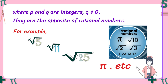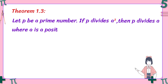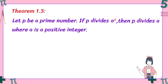Now let's look at Theorem 1.3. The statement is: Let p be a prime number. If p divides a squared, then p divides a, where a is a positive integer. So we are given that p is a prime number, p divides a², and therefore p must also divide a. Here a is a positive integer and we are not dealing with any negative numbers.